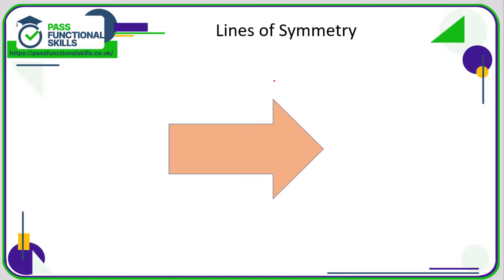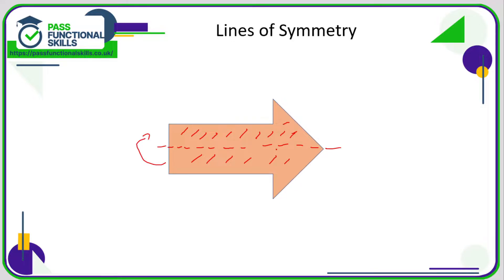Let's take a look at lines of symmetry. Here's an example of an irregular shape — an arrow. If I were to fold it along this line here, then this bottom side, if I were to fold it upwards, would sit perfectly on the top part with no overlap at all. This line would be called its line of symmetry — it's the line where, if you make a fold, one half sits perfectly on the other.